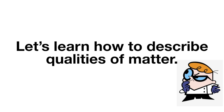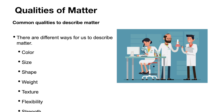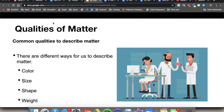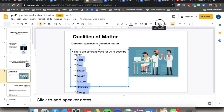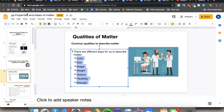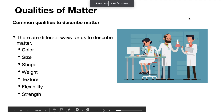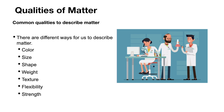So let's learn how to describe the qualities of matter. The common qualities used to describe matter are: color, size, shape, weight, texture, flexibility, and strength. We're going to break those down just a little bit more.